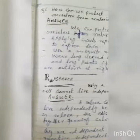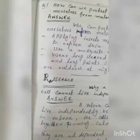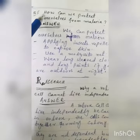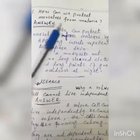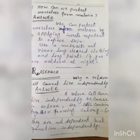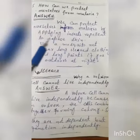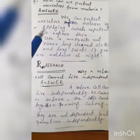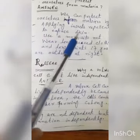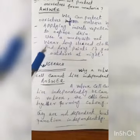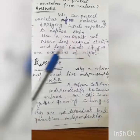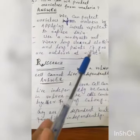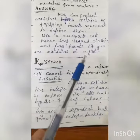Question No. 5: How can we protect ourselves from Malaria? We can protect ourselves from Malaria by applying insect repellent to exposed skin, using a mosquito net, and wearing long-sleeve clothing and long pants if you are outdoors at night.